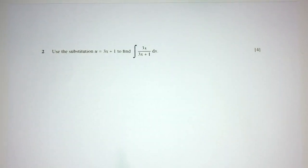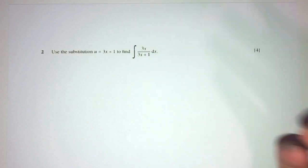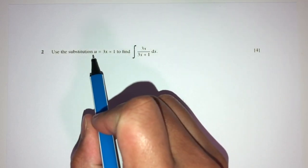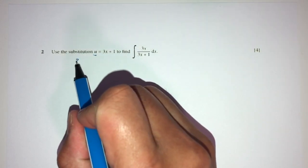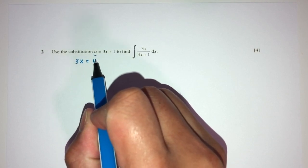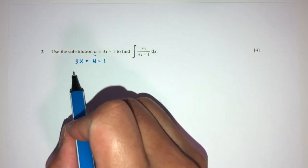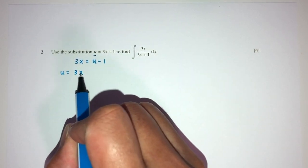Let's move on to question number 2. Here we have to use the substitution u equals 3x plus 1 to find this integral. Here we have 3x plus 1, which is just u, but here we have 3x. Can we do something about this? Yes, of course. So 3x will be the value of u minus 1.